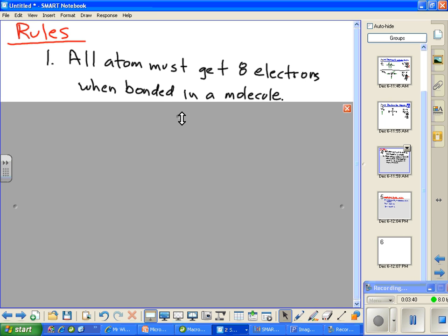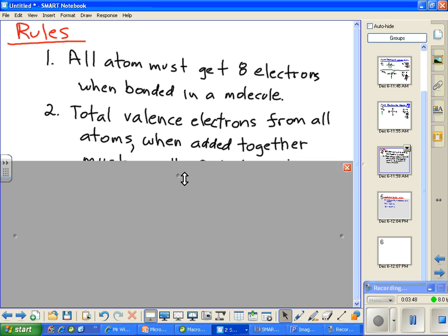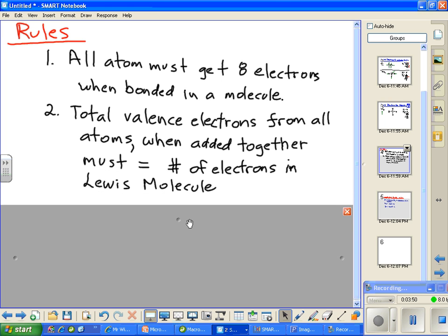What that means simply is that each atom must be touching or have around them eight electrons. Second big rule: total valence electrons from all atoms when added together must equal the number of electrons in the Lewis molecule. Pretty simple rules, right?